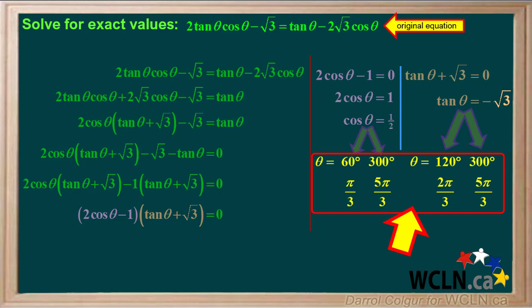To summarize, the values 60 degrees, 120 degrees, and 300 degrees for angle theta will solve this equation exactly. A good way to check your answer would be to insert each of these three angles in for theta in the original equation and see if it's correct for each one.